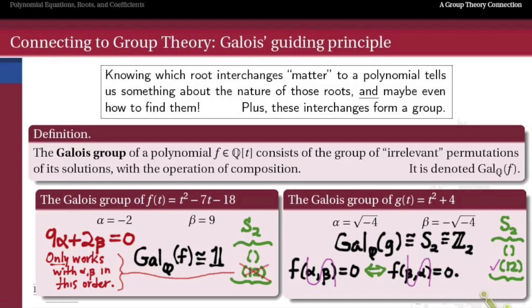So the Galois group is detecting an important difference between the solutions of these two polynomial equations. On the left, we have the two very different solutions, and because they're so different we can't swap them out for one another and expect nobody to notice - so the Galois group is trivial. On the right hand side, those two solutions are very similar to one another in view of the rationals - they're plus and minus the square root of negative 4, which is not even close to being part of the rational number system. So no polynomial that is satisfied by α and β will care if we switch them. The Galois group of that polynomial is the entire symmetric group on two symbols.